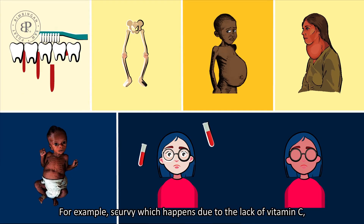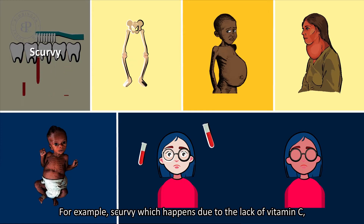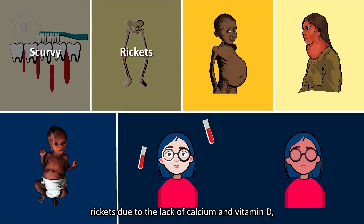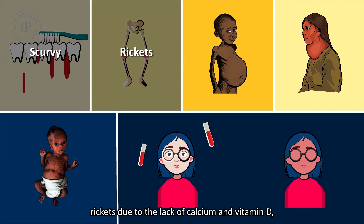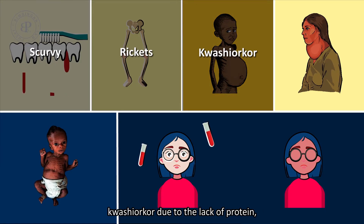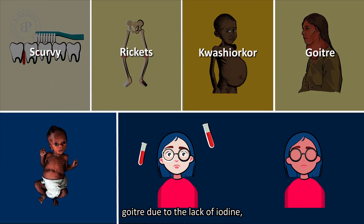For example, scurvy, which happens due to the lack of vitamin C. Rickets, due to the lack of calcium and vitamin D. Kwashiorkor, due to the lack of protein. Goiter, due to the lack of iodine.